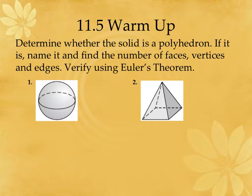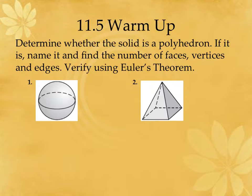Yes, you are going to have to find areas of these things. Section 11-5 is just identifying these solids — determine whether the solid is a polyhedron. If it is, name it and find the number of faces, vertices, and edges, and then verify using Euler's theorem — the hardest theorem on the planet.